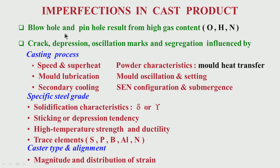Then there may be a depression on the cast surface. Depression basically means the surface is not uniformly flat — certain portions of the surface will have undulations or depressions. That is called a depression; this is a defect we do not want. We want the surface to be more or less flat.